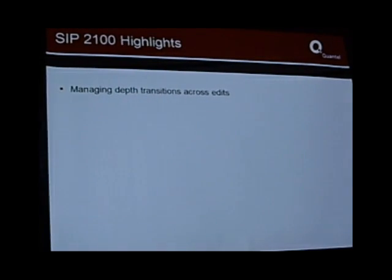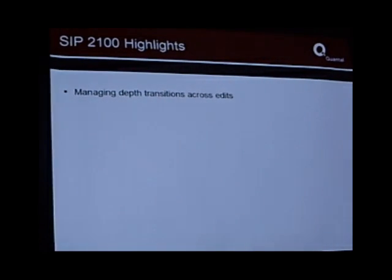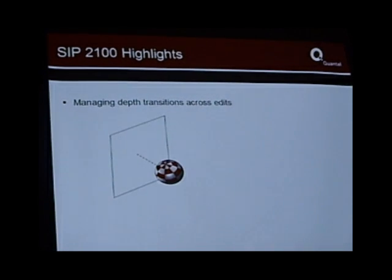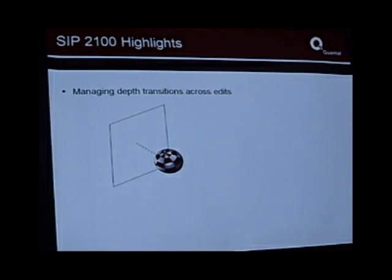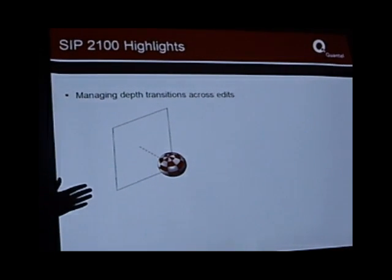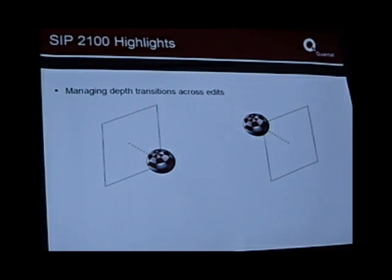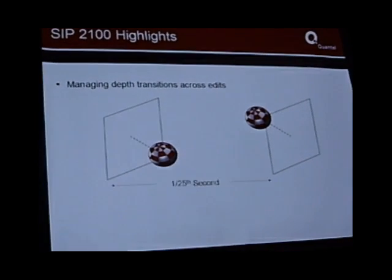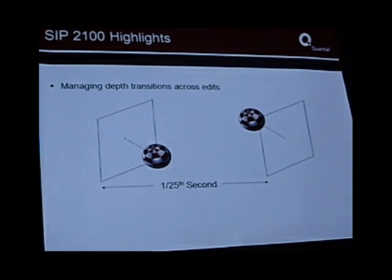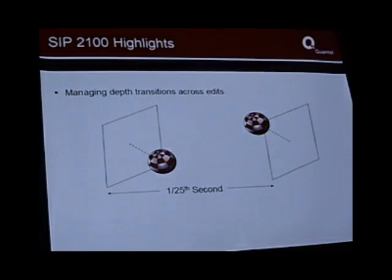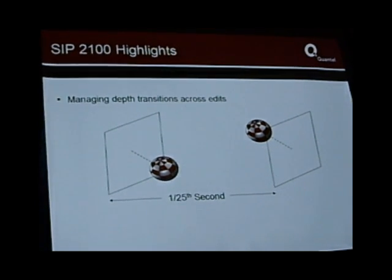Another very key area for a good viewing experience is managing depth transitions across edits. In stereo, you have the ability to position objects in 3D space — some shots might have objects in front of the screen, other shots behind the screen. If you edit those two together, in one twenty-fifth of a second your eyes are suddenly thrown off. This does not happen in nature. You don't change from a scene with lots of depth to suddenly having objects in different places. So you have to do something about this.